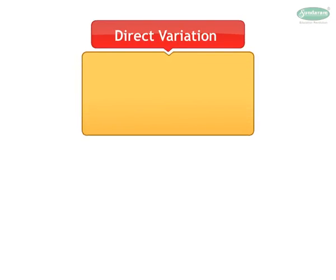We now go ahead to solve problems on variation which we have studied in lower classes. Direct Variation: we know when variable y is dependent on variable x such that y upon x is equal to constant k, we say that y is in direct variation with x. It is symbolically written as y is equal to kx, where k is a non-zero constant.